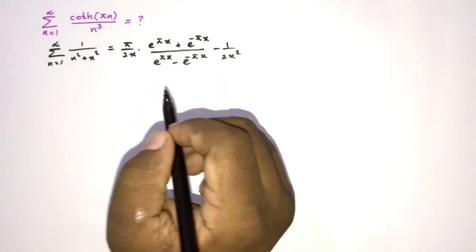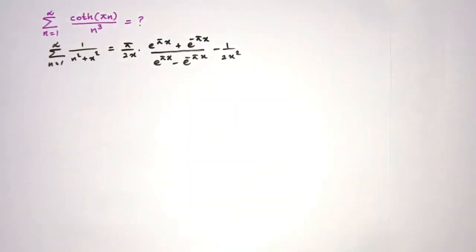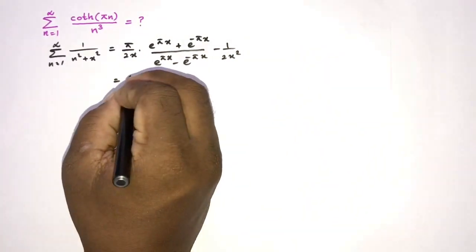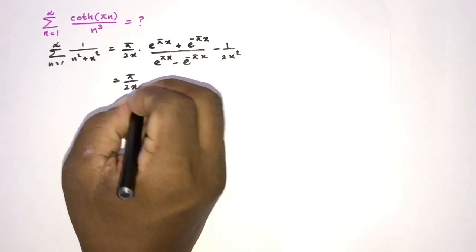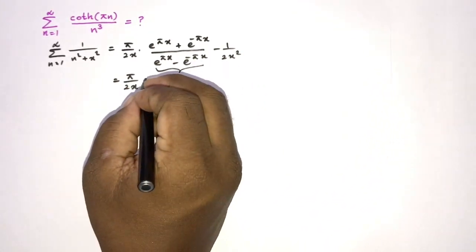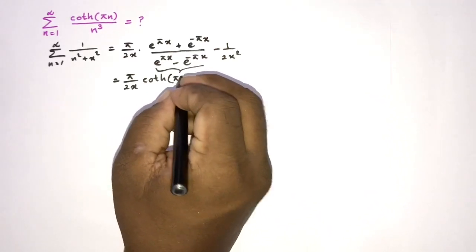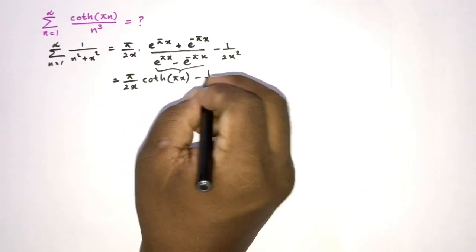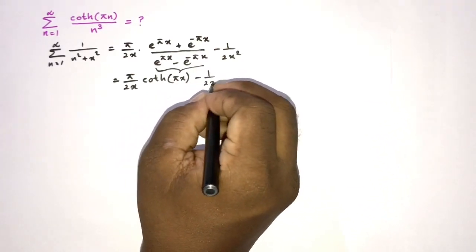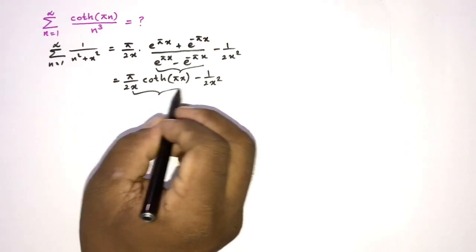If you'd like to watch that video, I'll put the link in the description and also make a card. We now know this equals pi over 2x, and the hyperbolic part is equal to hyperbolic cotangent of pi x, minus 1 over 2x squared.